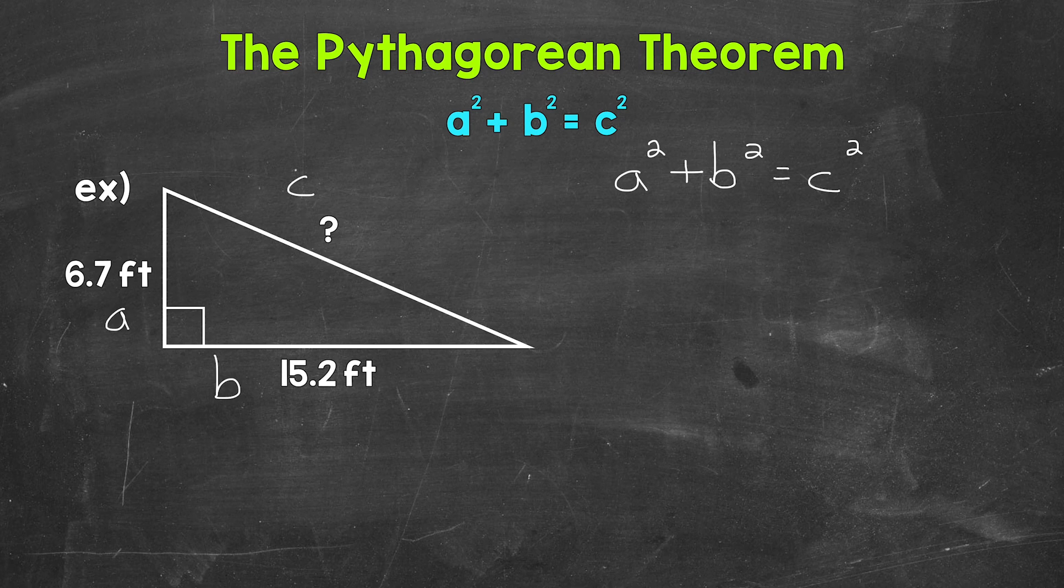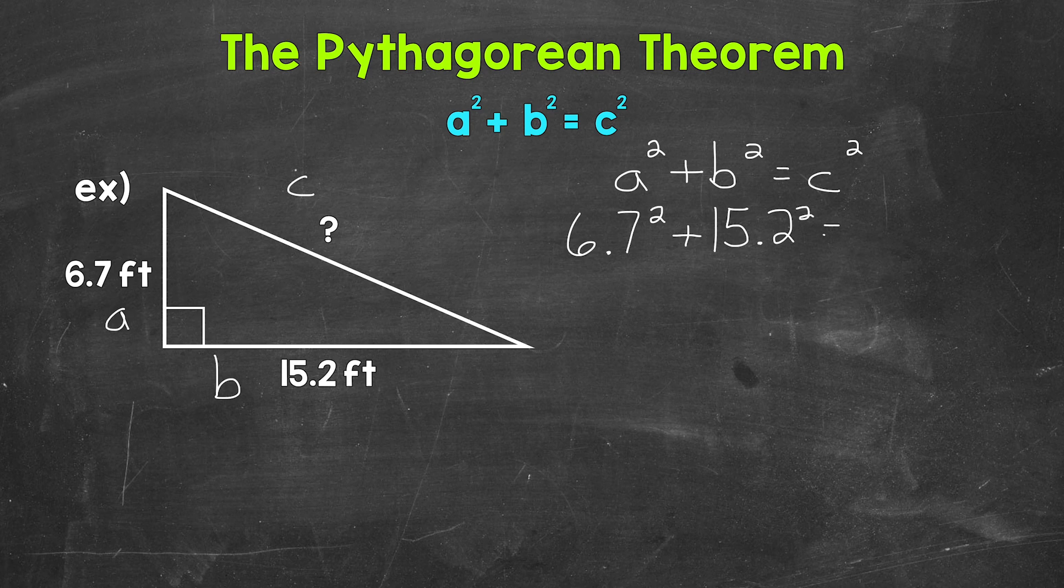A is 6.7 feet, so let's plug that in. So 6.7 squared plus b is 15.2 feet, so let's plug that in. So 15.2 squared equals c squared.